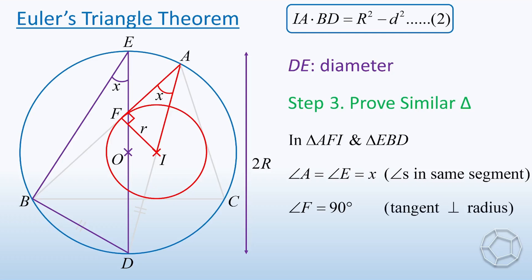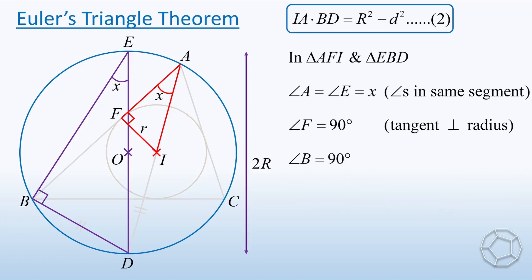We also have angle B is equal to 90 degrees because it is an angle in semicircle. So there is a pair of right angles. That means the two triangles are similar with the reason AA.